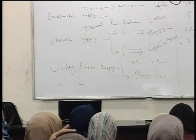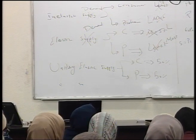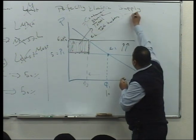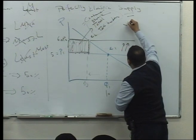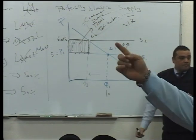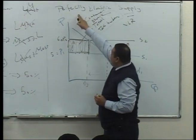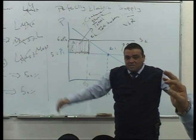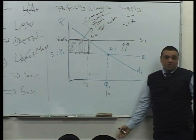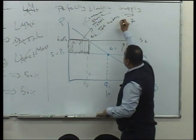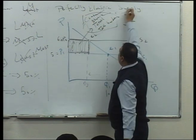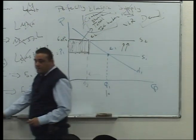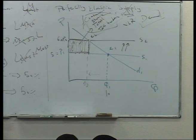When supply is perfectly elastic, the consumer bears all of the tax burden — this is the very long run. When demand is perfectly elastic, meaning the product has so many substitutes, the producer bears the whole of the tax burden. So the consumer bears the whole for perfectly elastic supply, and the producer bears the whole for perfectly elastic demand.